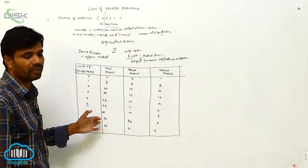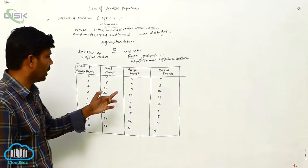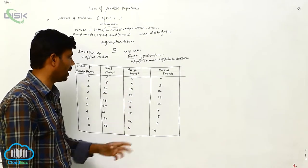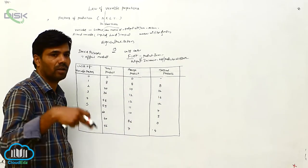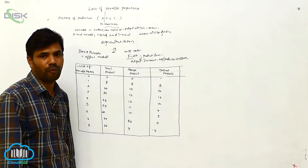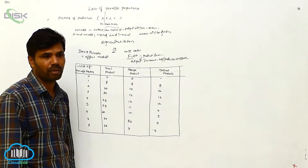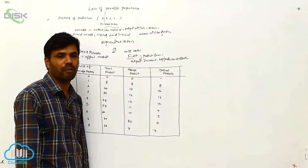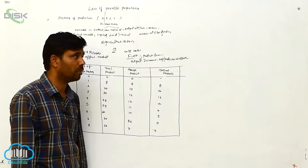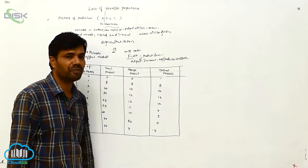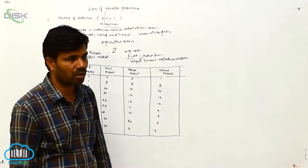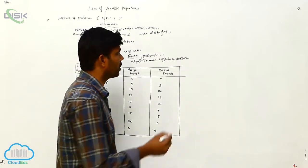Total product is given. Average product is total product multiplied — and marginal product: if you are adding the additional unit of variable, you are getting the marginal. So we know the definitions. There are some definitions here. That is called total product.